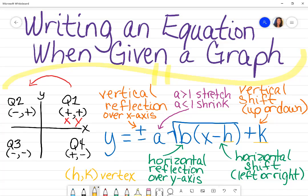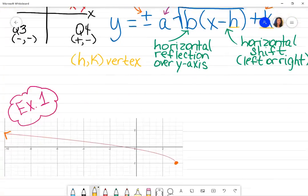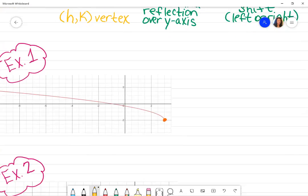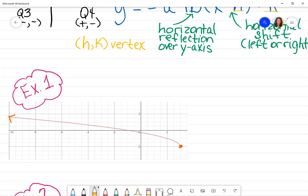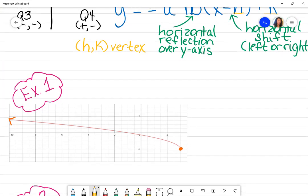H and K always represent your vertex. Let's get started here. I would go ahead and identify my vertex because that's going to help me start my equation. Look for the point, and if you don't see it, make it yourself and draw your arrow.